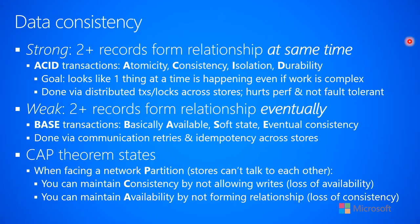There is a theorem known as the CAP theorem. CAP is also an acronym: C stands for Consistency, A stands for Availability, and P stands for Partition — specifically a network partition. The CAP theorem states that you can only ever have two of these three things. More specifically, when in the face of a network partition — that is, you have two data stores that are unable to talk to each other — the network has been partitioned.